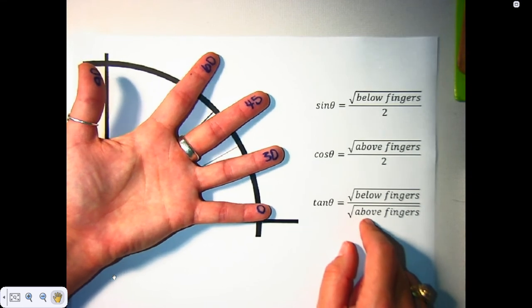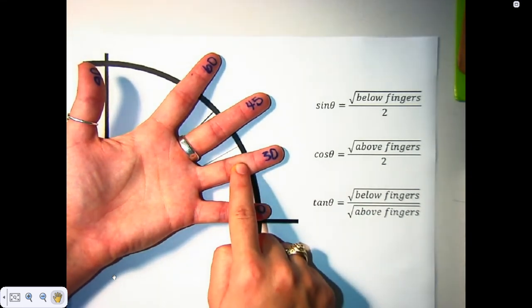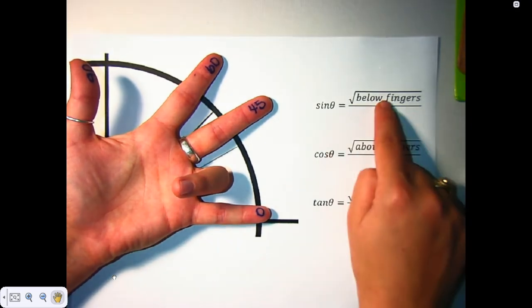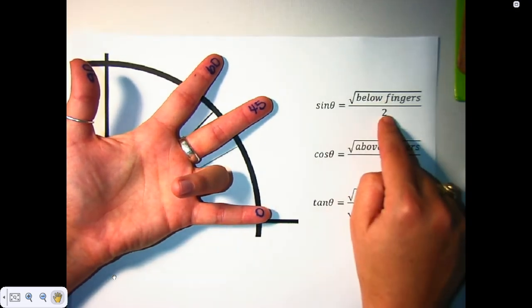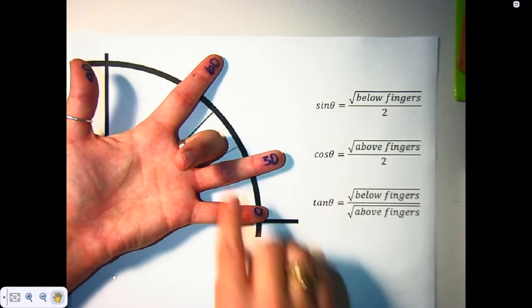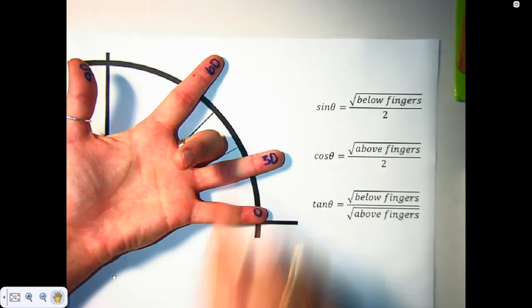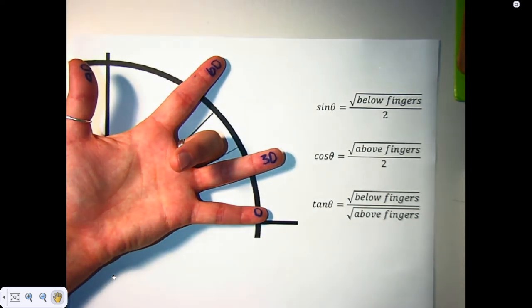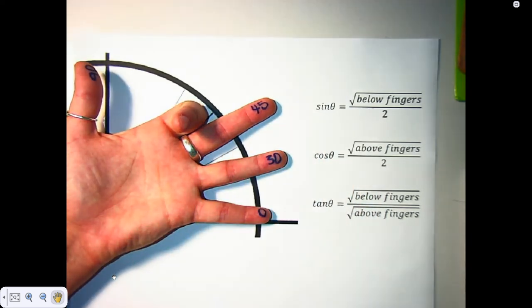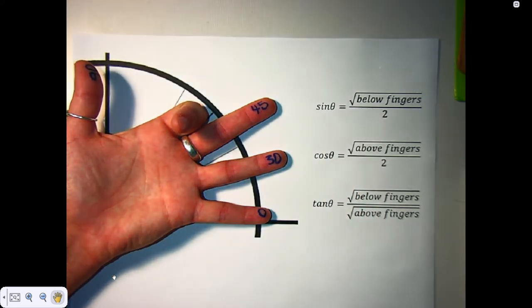So if I wanted to find the sine of 30, I would fold in the 30 finger. I have one finger left below, so the square root of 1 over 2, which is 1 over 2, is the sine of 30. The sine of 45 is the square root of 2 over 2, because I have two fingers below 45. The sine of 60 is square root of 3, because I have three fingers left underneath the reference angle, all divided by 2.